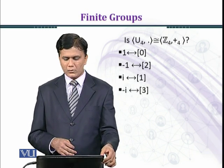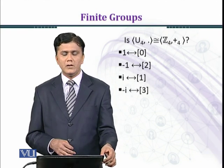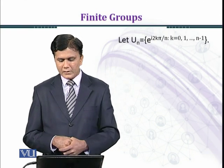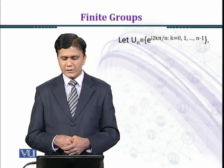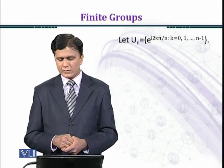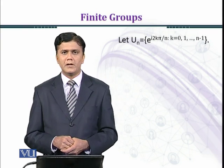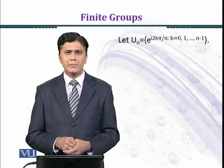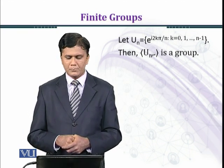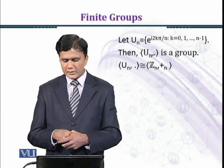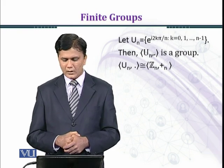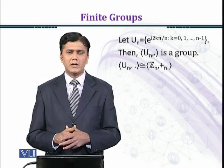-iota is the generator of U4 and class 3 is also a generator of Z4. So there is a one-to-one correspondence between U4 and Z4. We can generalize: Un is the set of nth roots of unity given by e^(iota·2kπ/n) for k = 0, 1, …, n-1. It has n elements, and Un under multiplication is a group isomorphic to Zn under addition modulo n. This result will be proved later.